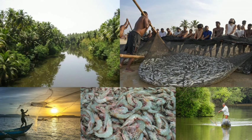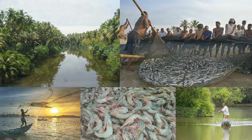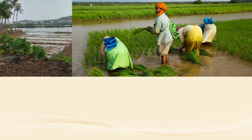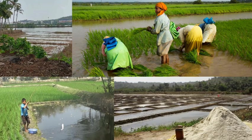The creeks in Goa are famous for prawn fishing. Sometimes river water enters low-lying lands. These lands are called khazans in Goa. They are useful for agriculture, fishing, and are used as salt pens from which salt is obtained. This work is done only in summer, from the month of March till the end of May.